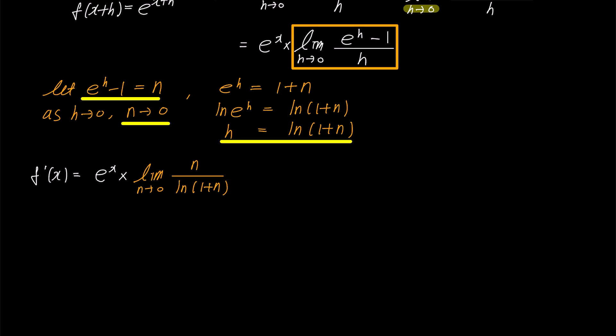Next, we multiply 1 over n to both the numerator and the denominator. The numerator becomes 1, and the denominator becomes 1 over n times ln 1 plus n. By utilizing the properties of logarithms and moving 1 over n as the exponent...